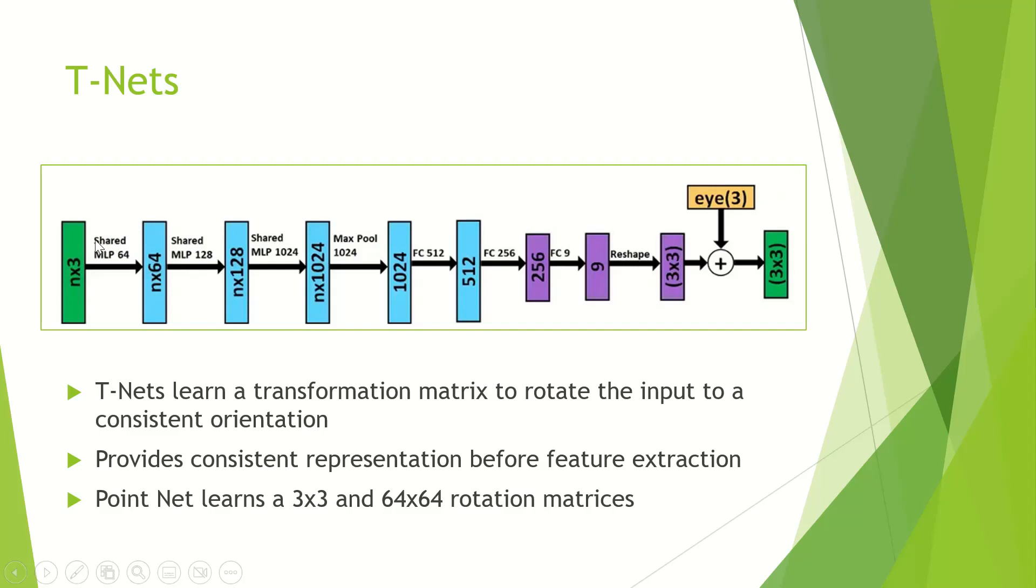Let's go into the next slide about the T-net. The T-net architecture is very similar to the PointNet architecture, a series of shared multilayer perceptrons followed by some regular fully connected networks. The purpose of the T-net is to learn this transformation matrix that rotates our input to a consistent orientation. This consistent orientation provides a consistent representation of the data before PointNet does its feature extraction. It makes it robust to a wide variety of inputs. PointNet learns two different rotations, a 3x3 rotation for the input, and a 64x64 rotation for the features.